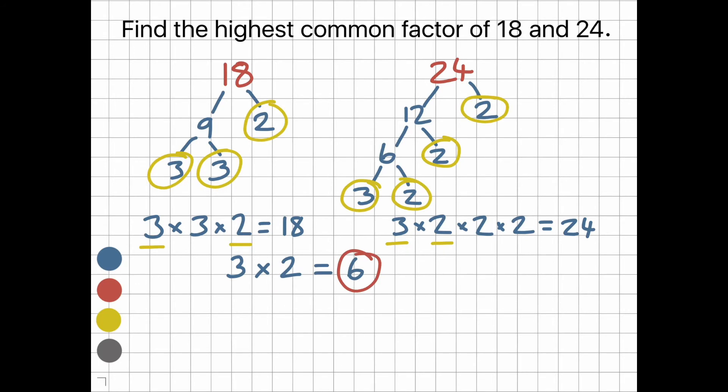One last thing: if you are comparing the prime numbers and there's only one number in common in both, then you don't need to multiply anything. The single number is your answer. In this example, we've got 10 and 16. As you see here, the prime number 2 is the common number, so the highest common factor is 2.